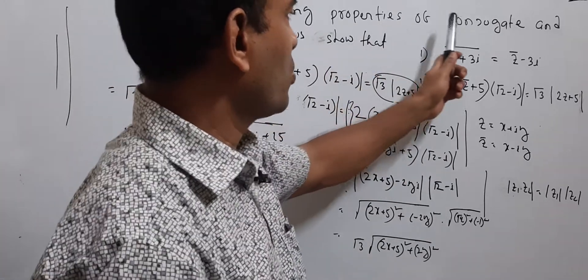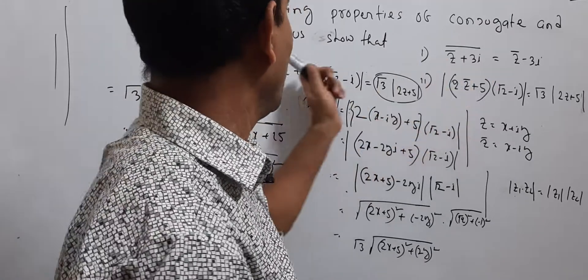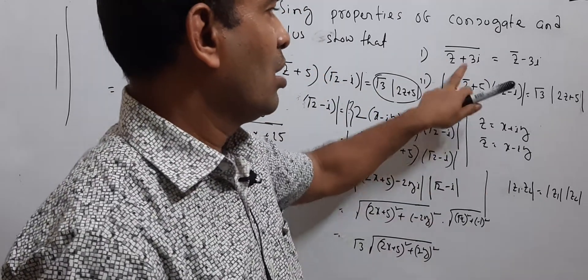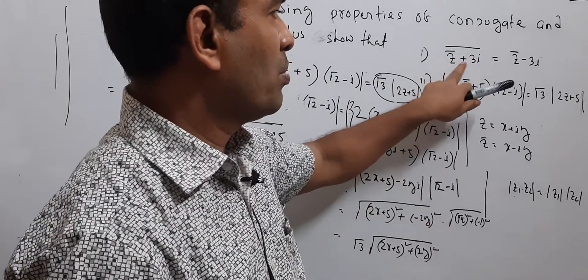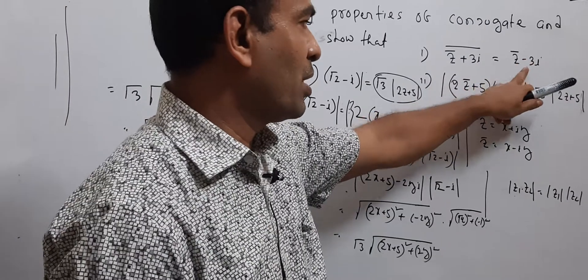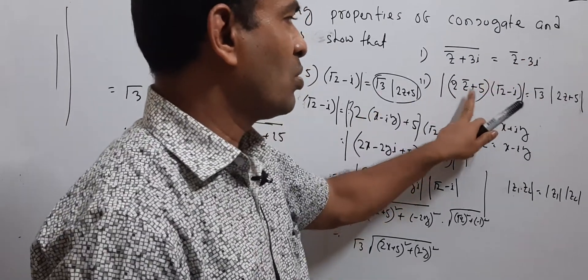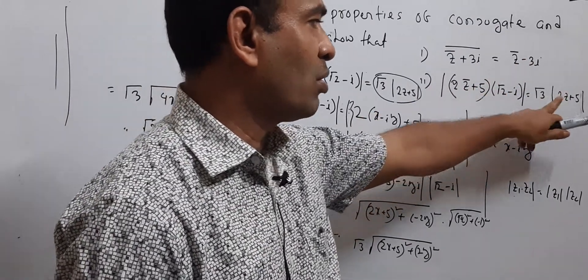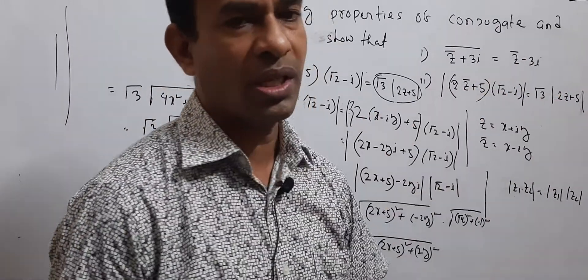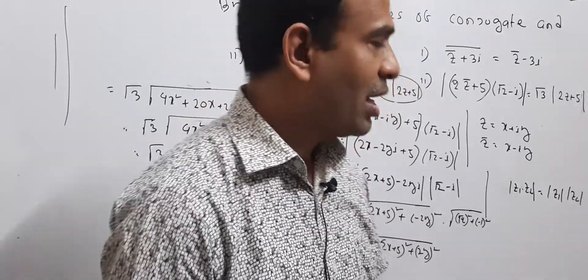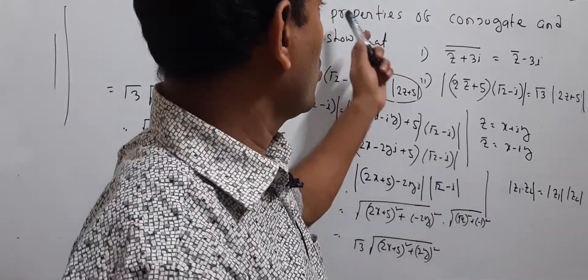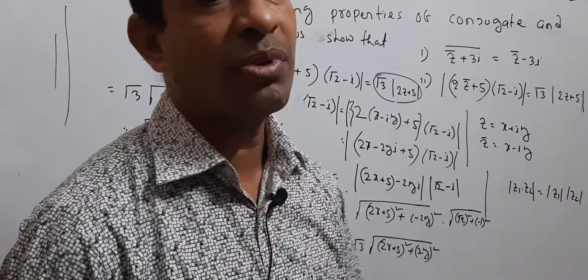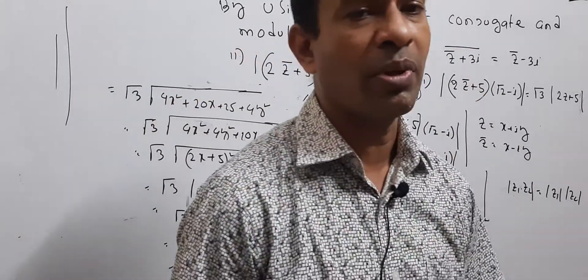By using properties of conjugate and modulus, so that modulus of z plus 3i equals to f1. We showed twice root 2 plus 5 root 2 minus i equals f1. Modulus using properties of conjugate and absolute value to complete the proof.